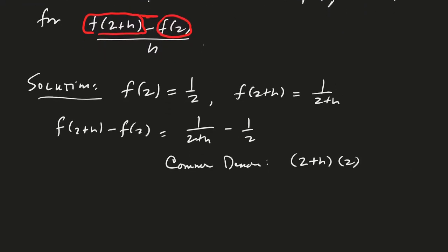And so the first fraction, I would multiply by 2/2. And then the second fraction, I would multiply by (2+h)/(2+h). And now I have my common denominator. And so I have that that's equal to 2 minus (2+h). Here's where parentheses come in handy.